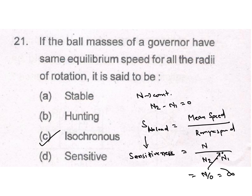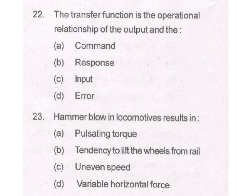The transfer function is the operational relationship of the output and the command. From the options, A is the answer — it is the relationship of the output and the command. Hammer blow in a locomotive results in the tendency to lift the wheels from the rail. B is the answer.